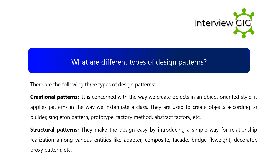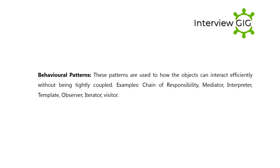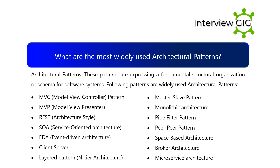What are the different types of design patterns? There are three types: Creational patterns are concerned with the way objects are created in an object-oriented style — examples include Builder, Singleton, Prototype, Factory Method, and Abstract Factory. Structural patterns make design easy by introducing simple ways for relationship realization among entities — examples include Adapter, Composite, Facade, Bridge, Flyweight, Decorator, and Proxy. Behavioral patterns describe how objects can interact efficiently without being tightly coupled — examples include Chain of Responsibility, Mediator, Interpreter, Template, Observer, Iterator, and Visitor.